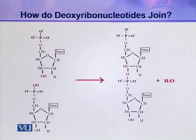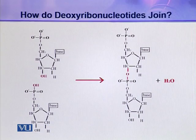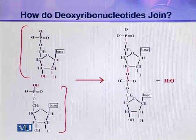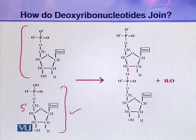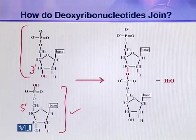How is this phosphodiester linkage formed, and what type of linkage is it? Let us see in this picture. You can see these two deoxyribonucleotides and how they are joined. This phosphate group is attached to the 5 prime carbon of the pentose sugar, and this phosphate is next attached to the 3 prime carbon of the next deoxyribonucleotide. A hydroxyl group is present at this 3 prime carbon.